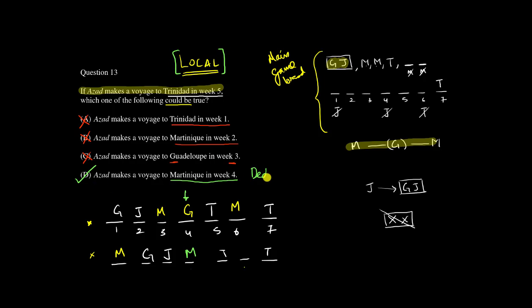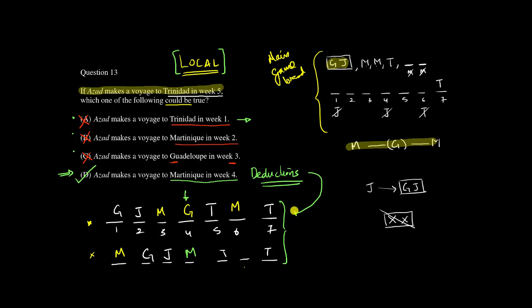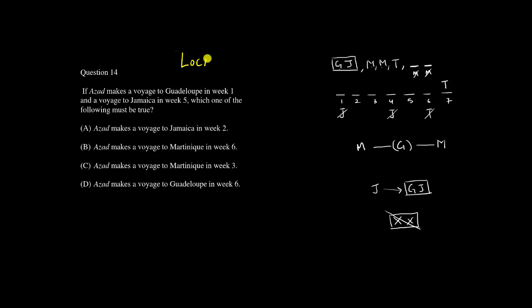In a local question you need to make additional deductions. Another way to solve it is to work with each answer choice and check whether it is false, but that takes more time. Making upfront deductions and limiting the number of cases is the better approach. Question 14 is another local question: if Azad makes a voyage to G in week one and to J in week five, which of the following must be true?